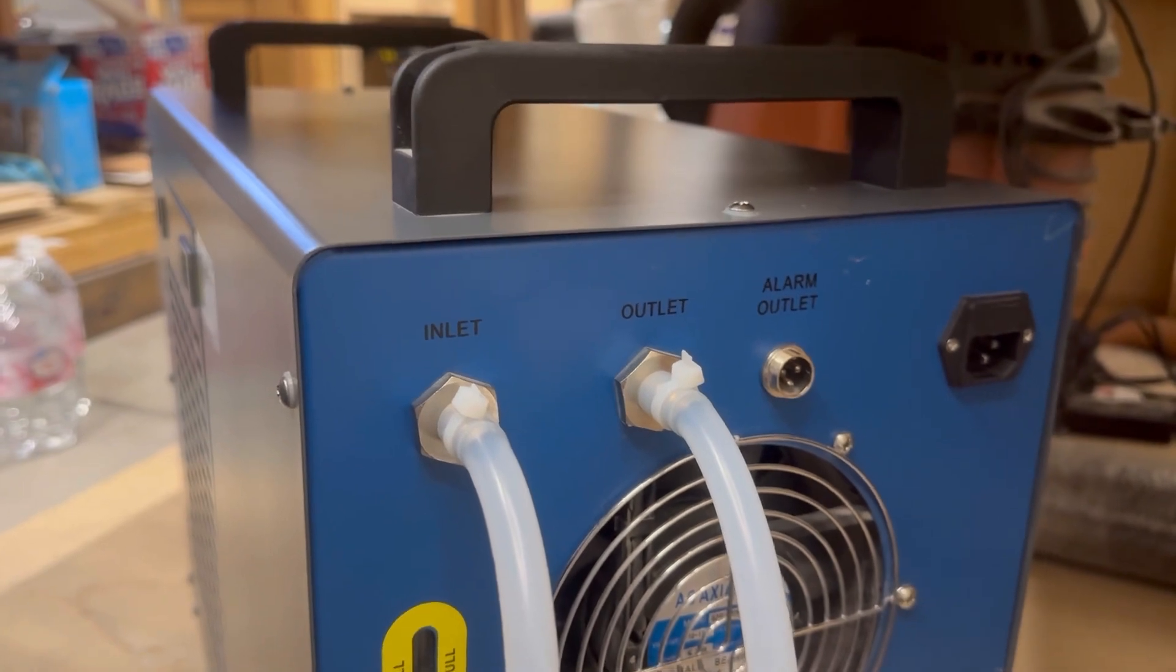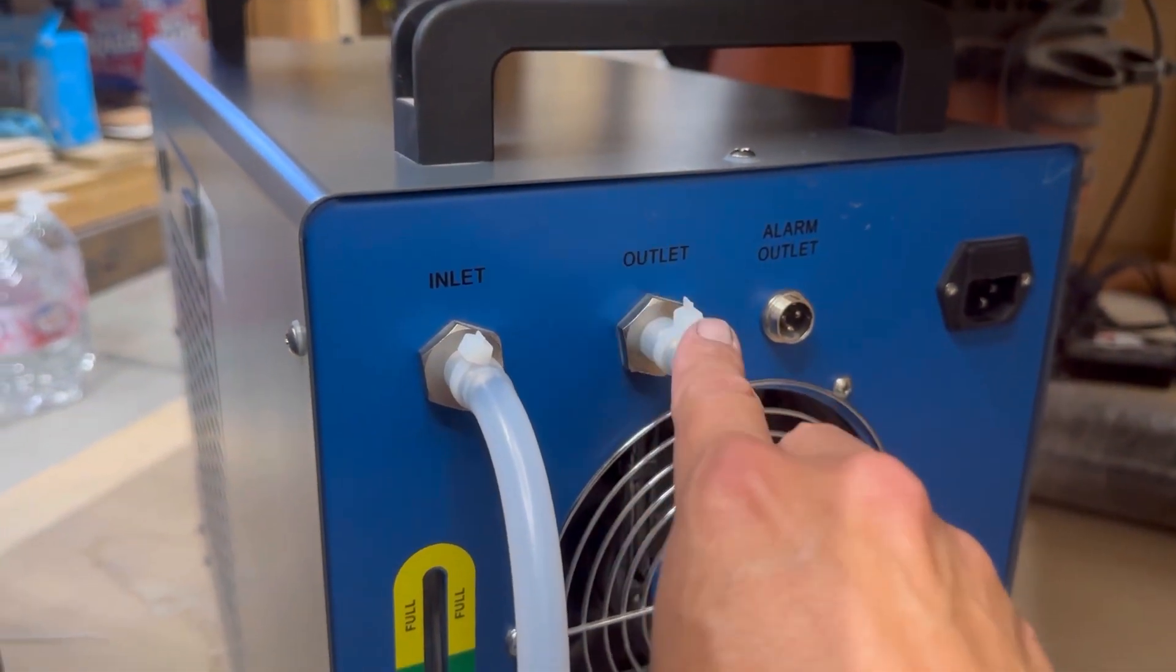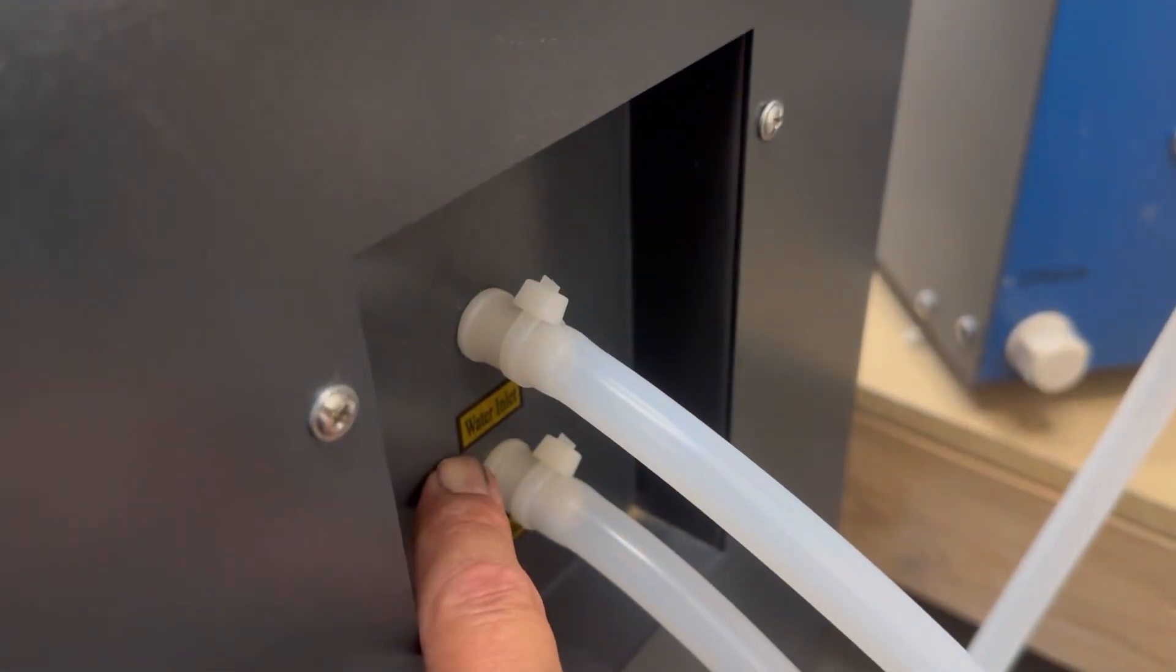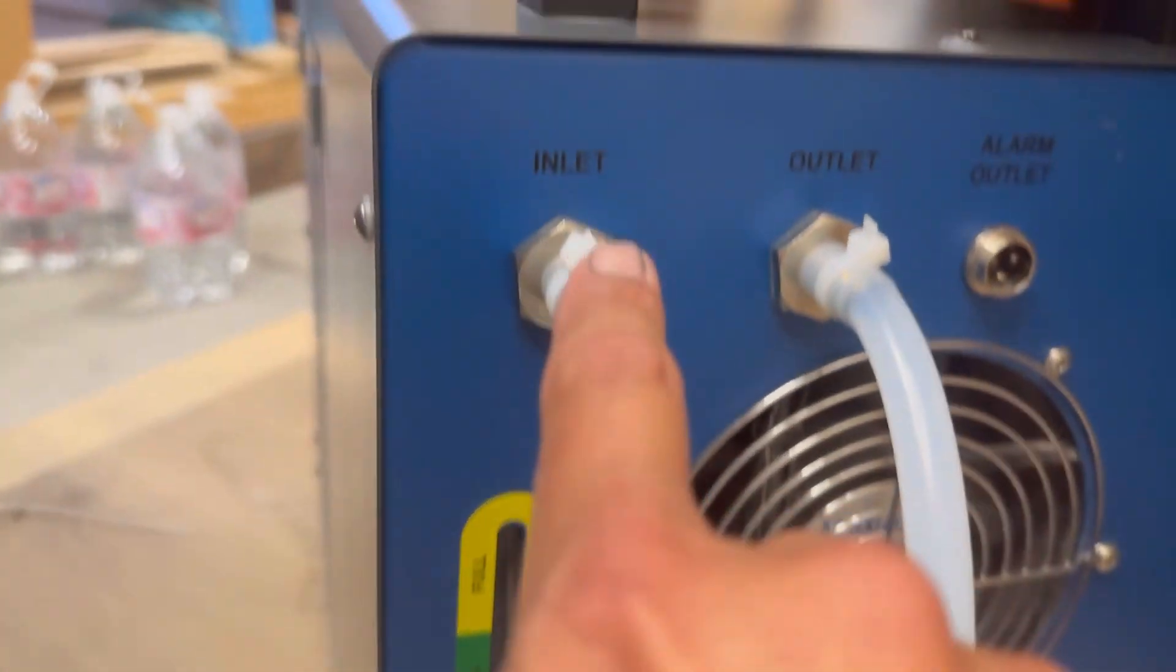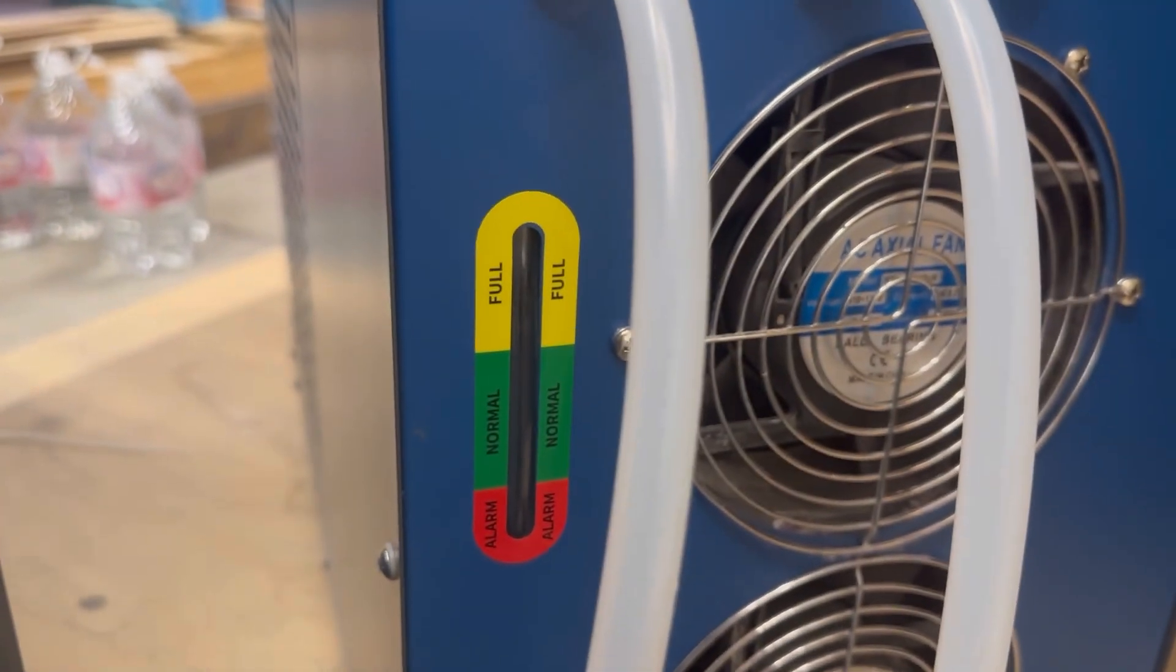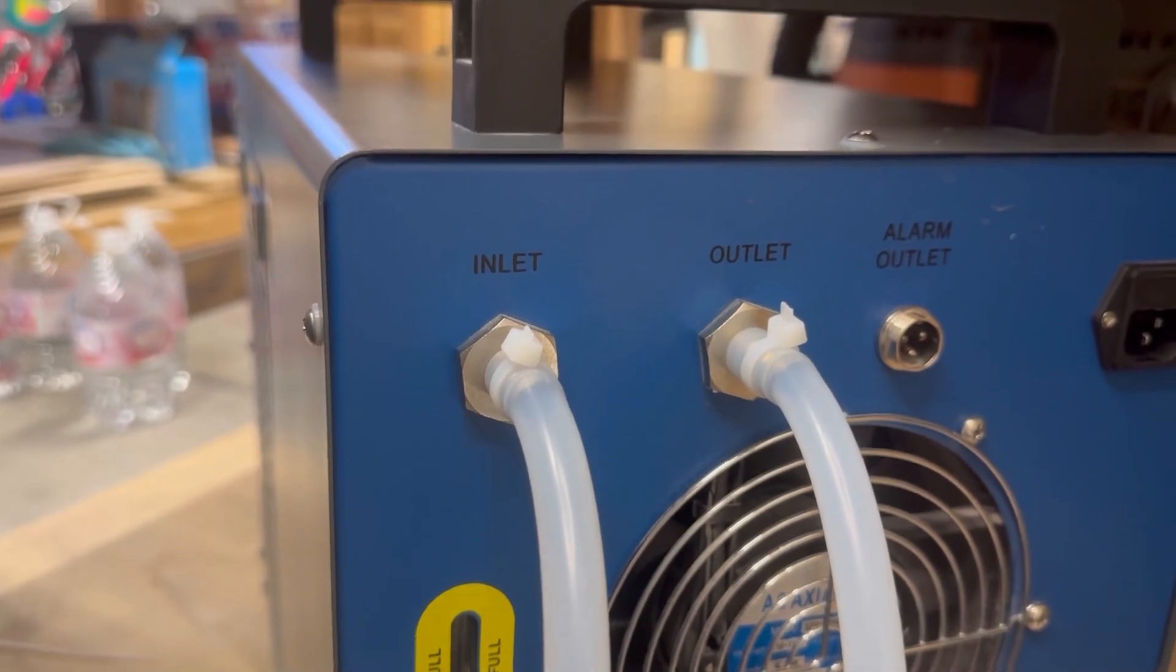Now that we got everything secure, just to go over one more time: outlet which is marked on the chiller to the inlet on the laser. Outlet on the laser to inlet on the chiller. Next thing we're gonna do is we're gonna fill it up with water and get her going.